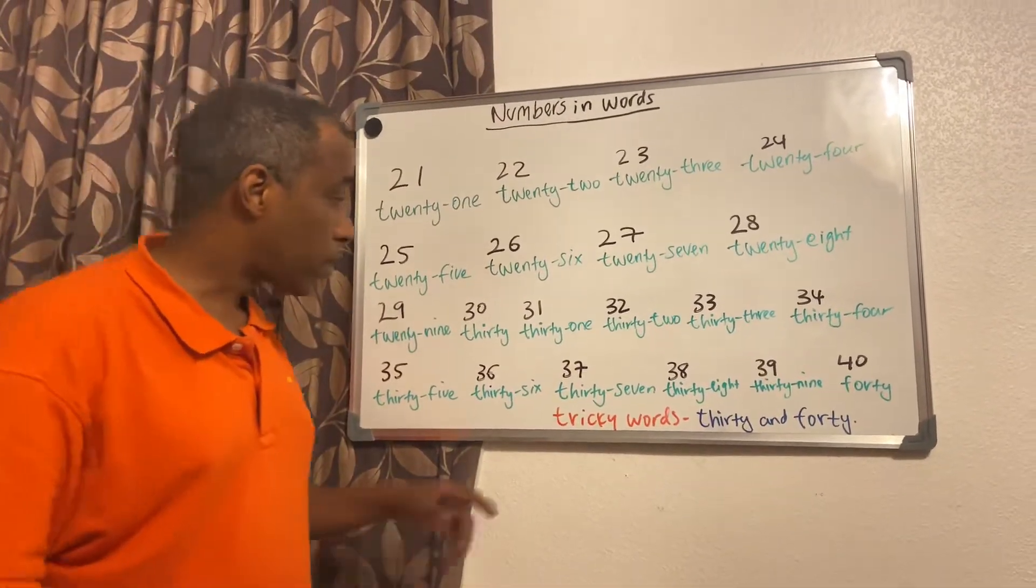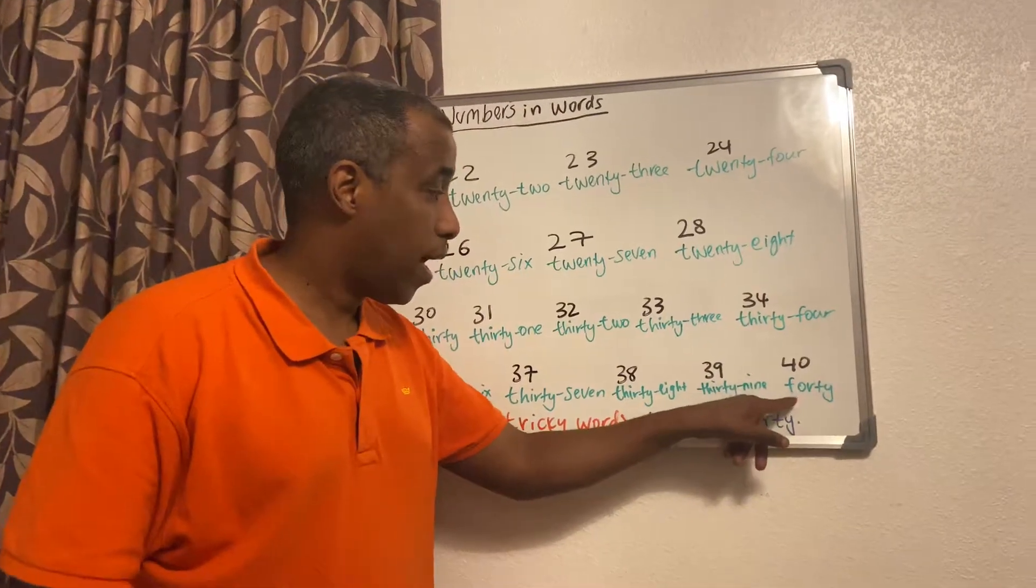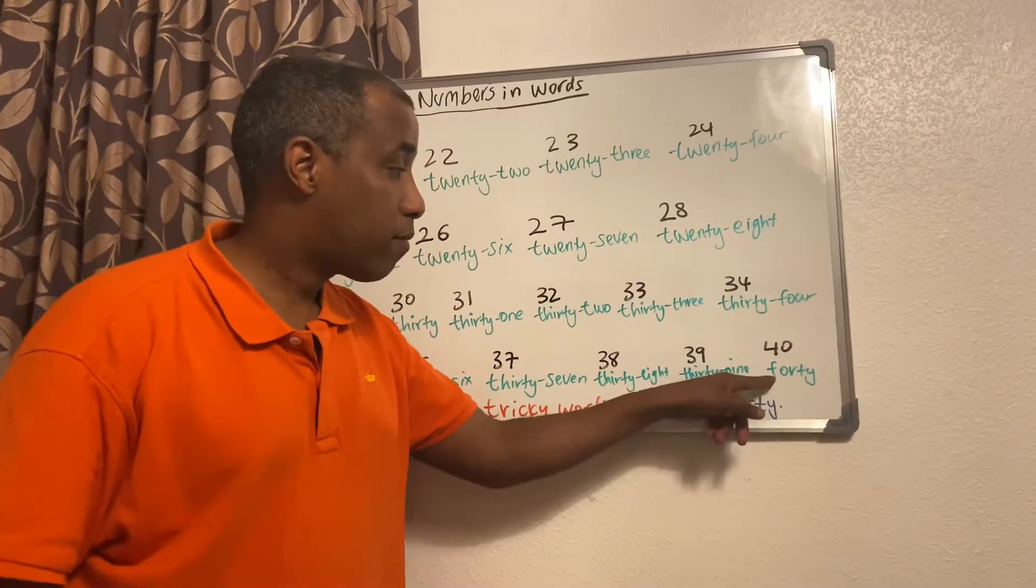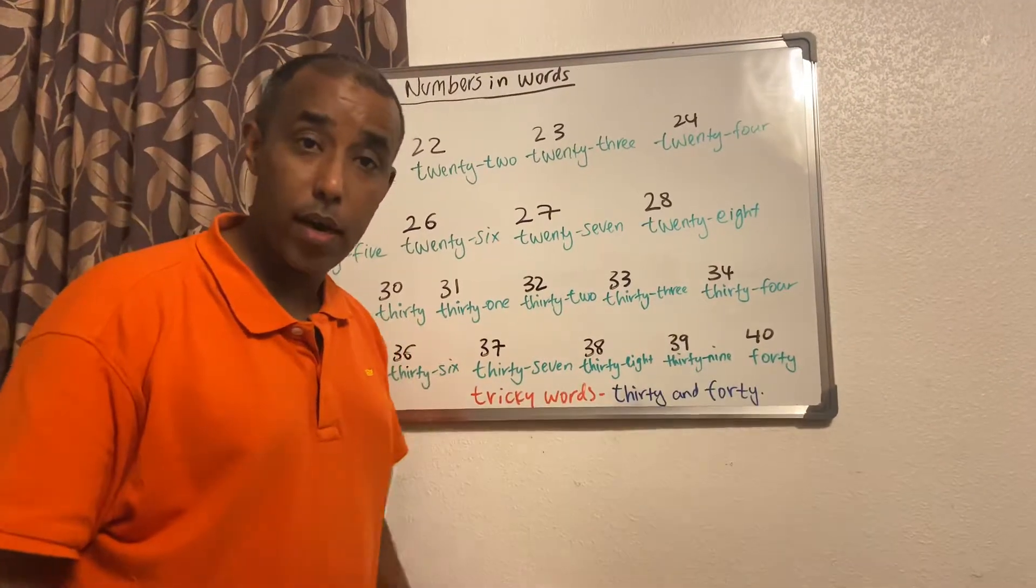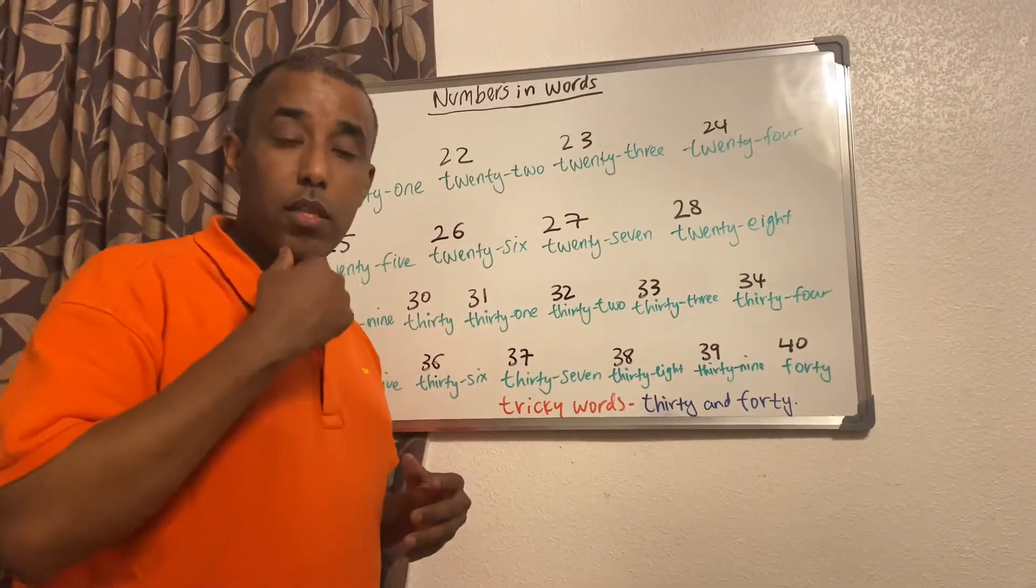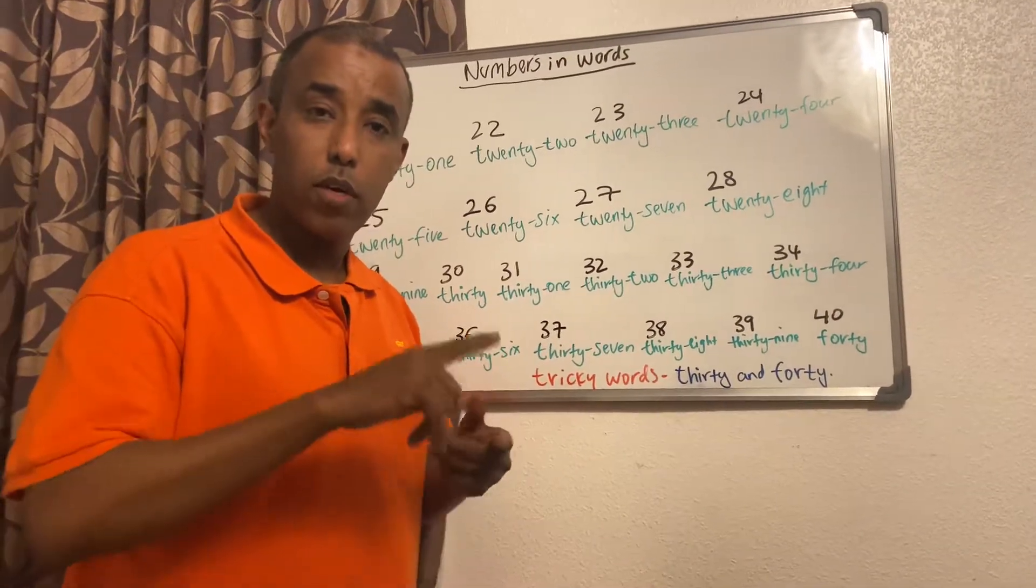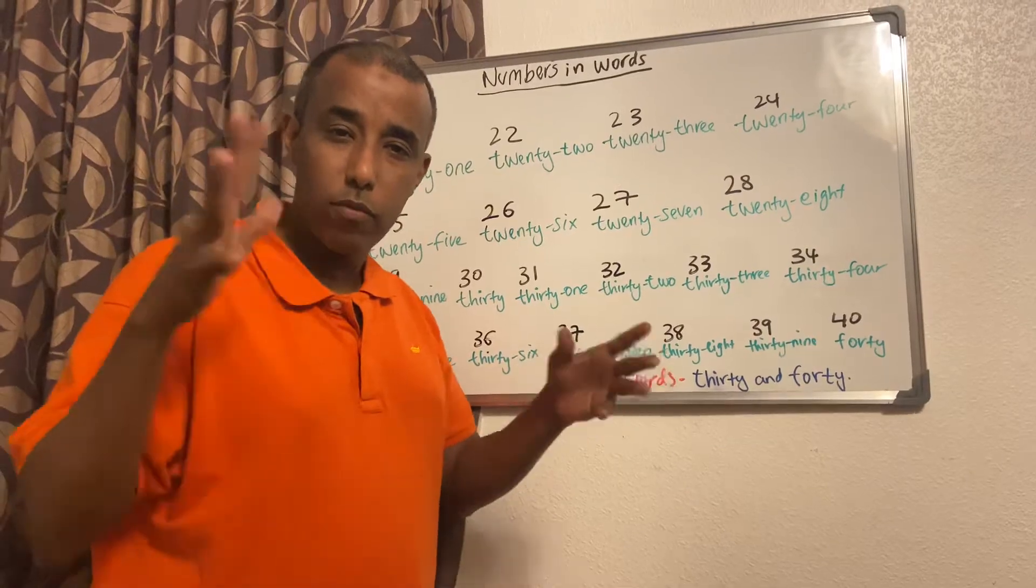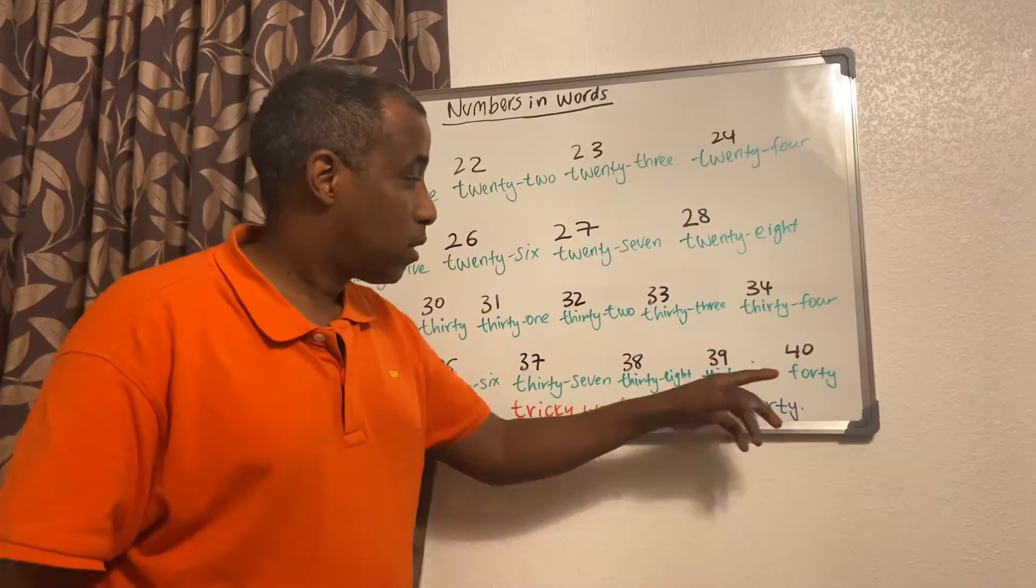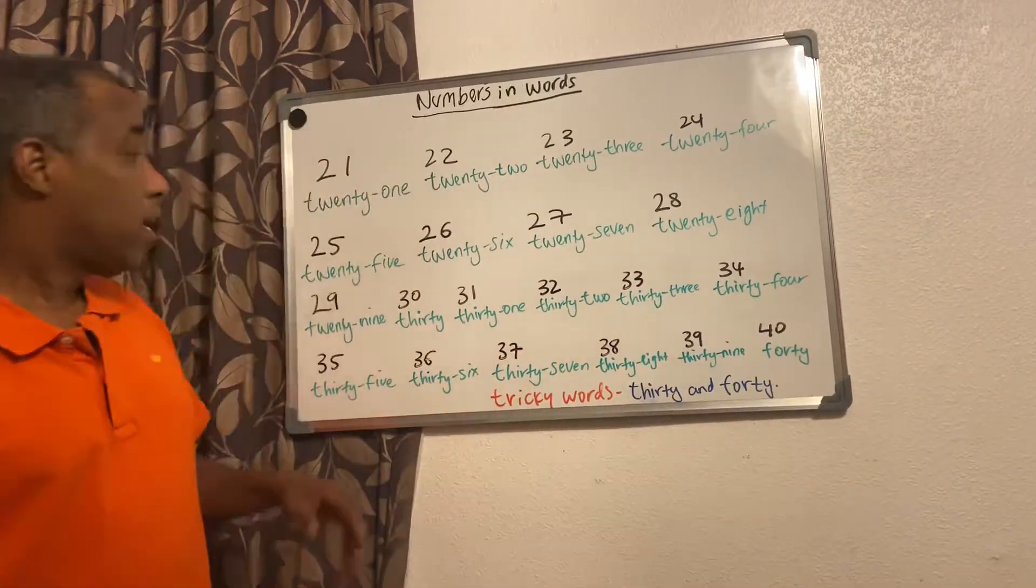I'll repeat again: F-O-R-T-Y. Forty is always a bit tricky for some people because there's four, fourteen, and forty. They're all kind of similar and sometimes it's tricky to understand. It's a bit challenging, but F-O-R-T-Y, that's forty.